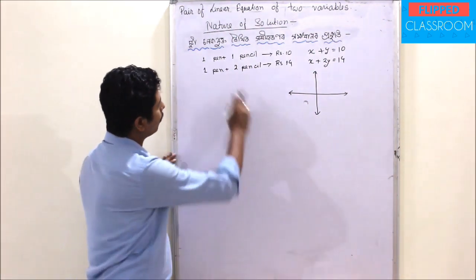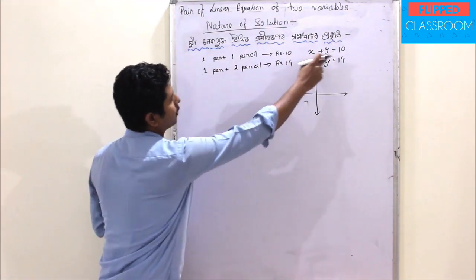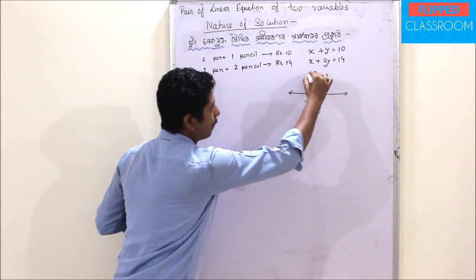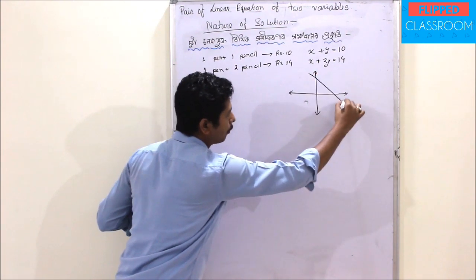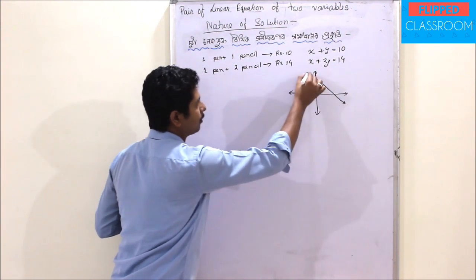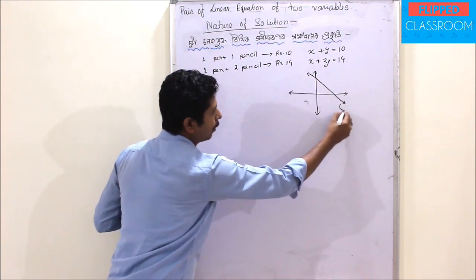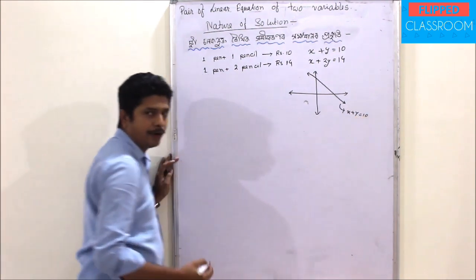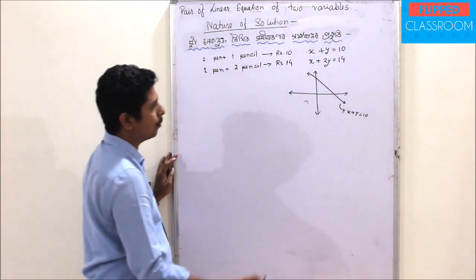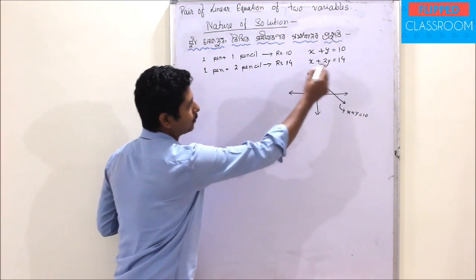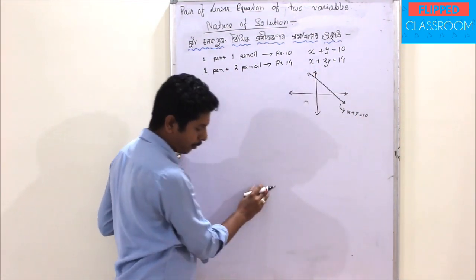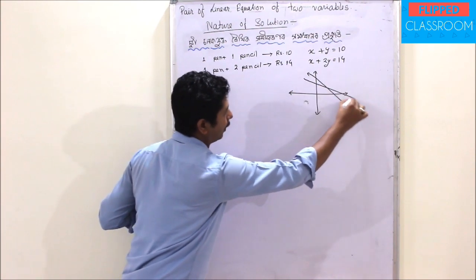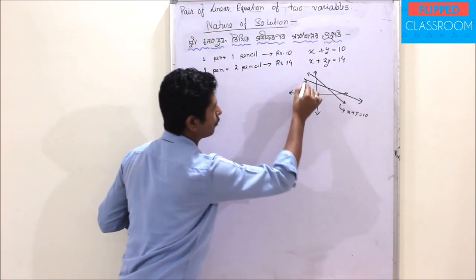This formula is x plus y equal to 10, and that c is equal to 10. The formula is x plus y equal to 10. Next, x plus y equal to 14, and that c is equal to 15.